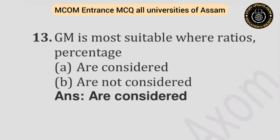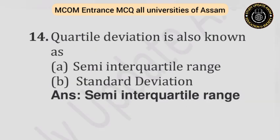Question number thirteen: GM is most suitable where ratios and percentages — Option A: Are considered. Option B: Are not considered. Answer is are considered. Question number fourteen: Quartile deviation is also known as — Option A: Semi-interquartile range. Option B: Standard deviation. Answer is semi-interquartile range.